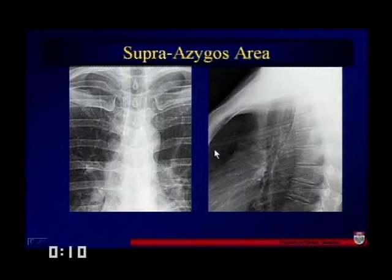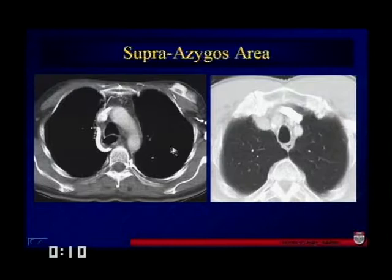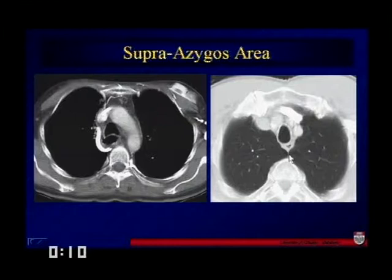In this case we can very easily see the arch of the azygous, well-opacified because of very good infusion. Here is the posterior junction line, well-defined. If we had any kind of posterior mediastinal mass there, it would be difficult to see that on plain radiograph.